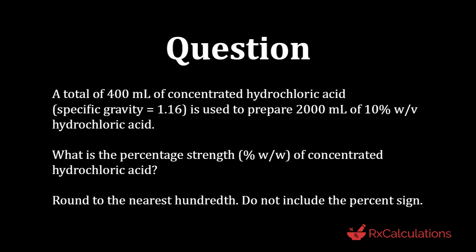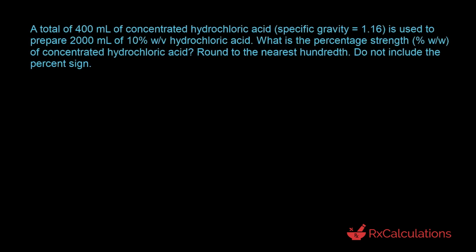This question says: 400 milliliters of concentrated hydrochloric acid with specific gravity 1.16 is used to prepare 2000 milliliters of a 10% weight by volume hydrochloric acid. What is the percentage strength weight by weight of concentrated hydrochloric acid? Round to the nearest hundredth. Do not include percent sign. The goal is to calculate the concentration of concentrated HCl as percentage weight by weight. The approach is to first use the algebraic equation to find the concentration as percentage weight by volume, then convert to percentage weight by weight.